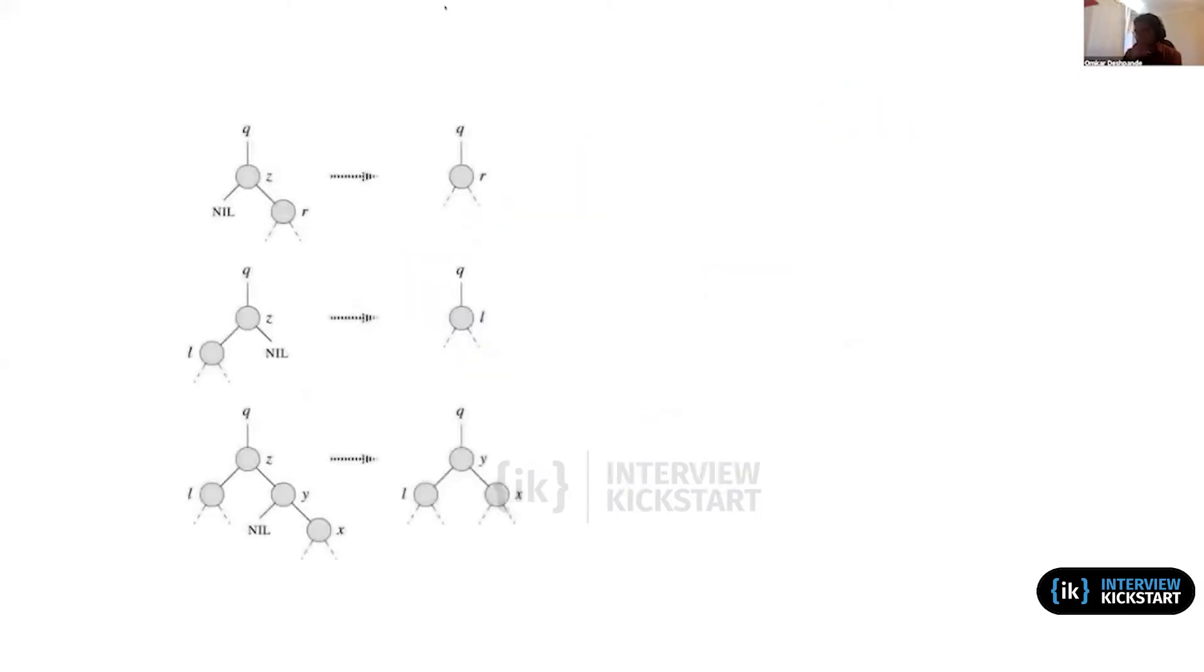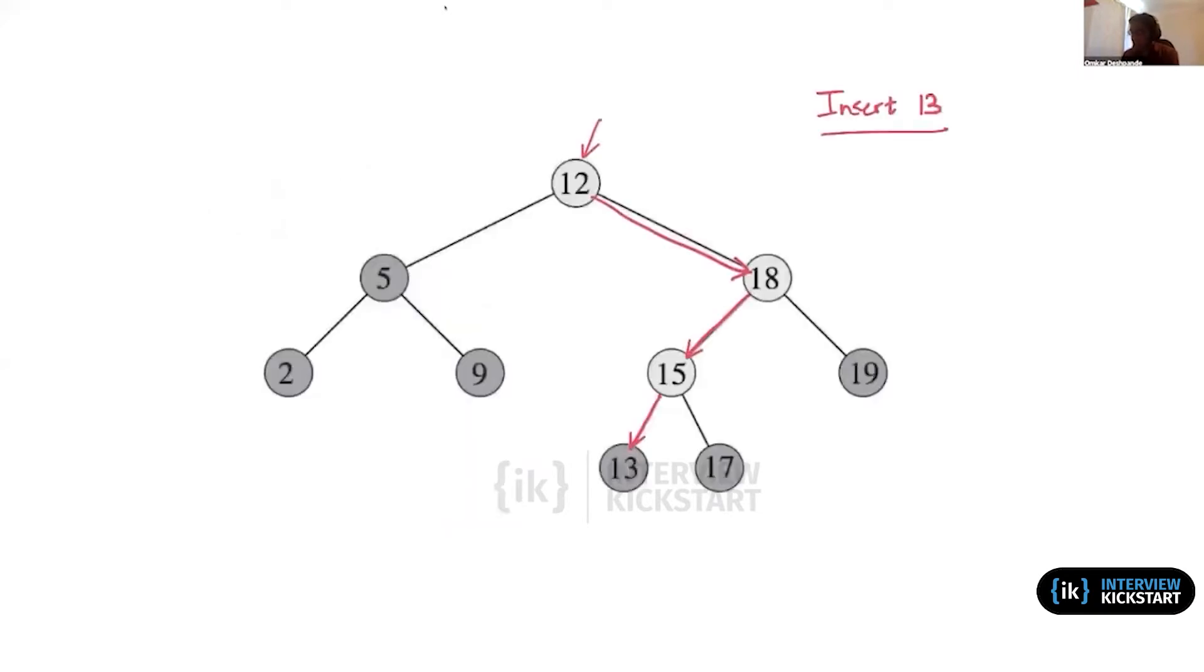And then for delete, we had actually three different cases. Suppose after inserting 13, I want to delete it. Then I would again do a search for it in the tree, and then once I find it, I see that it's a leaf node.